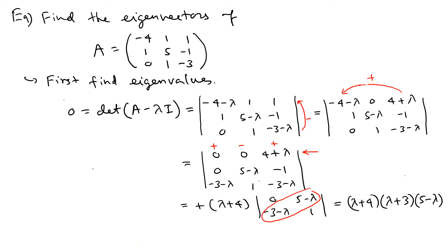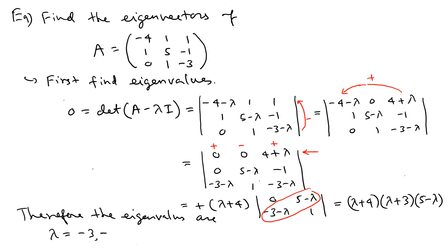Therefore the eigenvalues are lambda = -3, -4, and 5. Those are the eigenvalues — the first step is done.